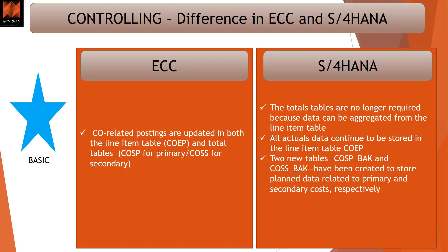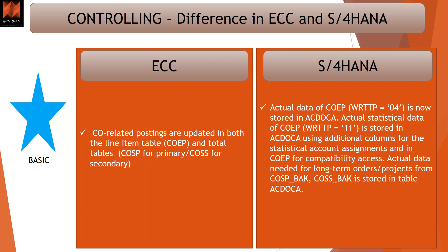ACDOCA is also called the universal journal or central journal where all accounting postings are added, including FI as well as CO. Actual data of COEP with reference to transaction type 4 is now stored in ACDOCA, and actual statistical data of COEP with reference to transaction type 11 is also stored in ACDOCA, using additional columns for statistical account assignment with COEP compatibility access. Actual data for internal orders and projects is stored in ACDOCA itself, which is now the key table. COSP_BACK and CO_ACCESS_BACK still exist at the totals level to support this.